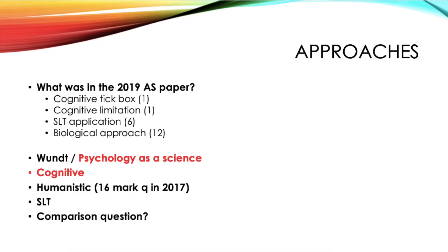What do I think could come up in the 2019 paper? You've got Wundt, and then you've also got the idea of psychology as a science, whereby Watson and Skinner started conducting lab studies and really bringing scientific rigour to psychology. I think we haven't really seen this one so much in the past, so it's a good one that could come up, and it does underpin psychology as we know it today.